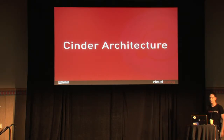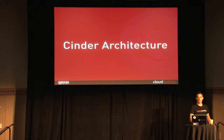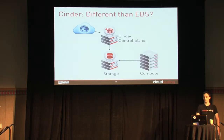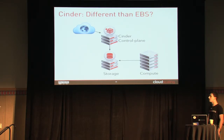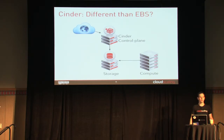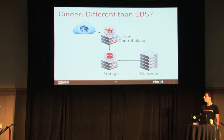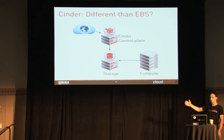The Cinder architecture, at a high level — from the 50-foot perspective — it kind of looks a little bit like Amazon. You have a control plane, it's loosely coupled to the storage, and your compute nodes — what would be EC2, or in this case Nova Compute — talks to your storage.